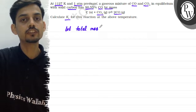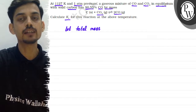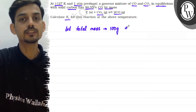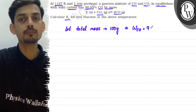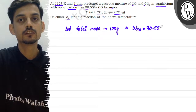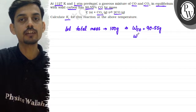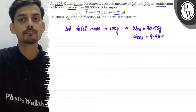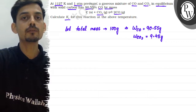For percentage composition, we assume the total mass is 100 grams. Under this assumption, the mass of carbon monoxide will be 90.55 grams, and the mass of carbon dioxide will be 100 minus 90.55 grams, that is 9.45 grams.